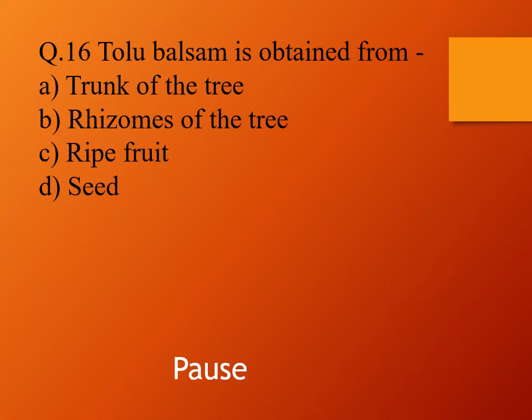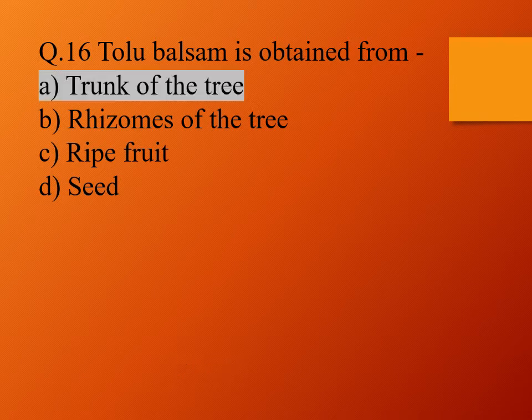Question 16. Tolu balsam is obtained from: option A, trunk of the tree; option B, rhizome of the tree; option C, ripe fruit; and option D, seed. The right answer is option A, trunk of the tree. So Tolu balsam is obtained from the trunk of the tree.